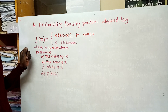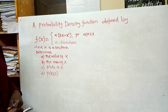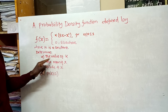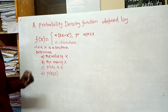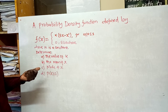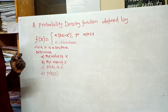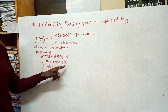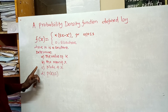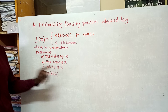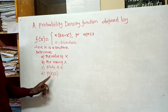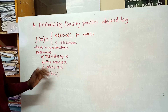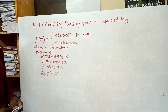From that, we know that k is a constant. We are supposed to determine the value of k, then the mean of x — also called the expectation of x — then find the mode of x, and also find the probability that x has a value greater than or equal to 2.